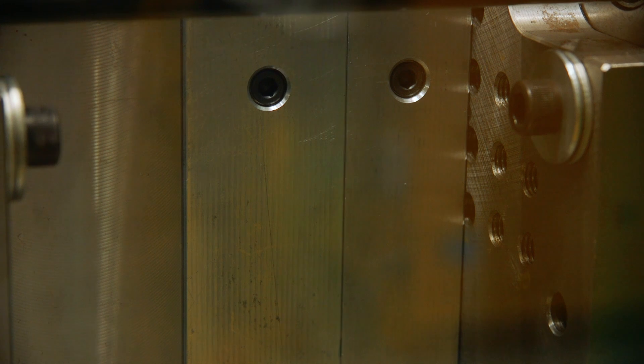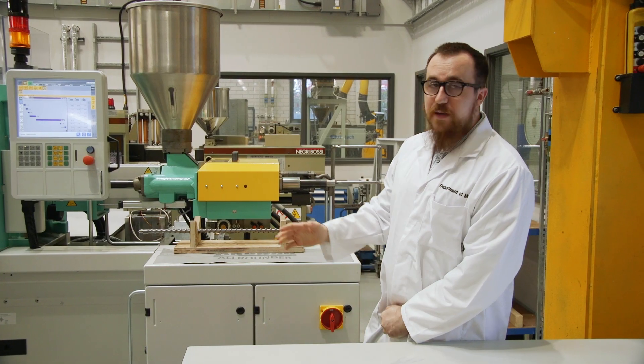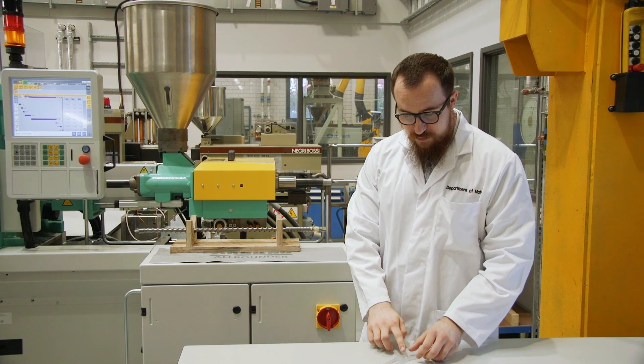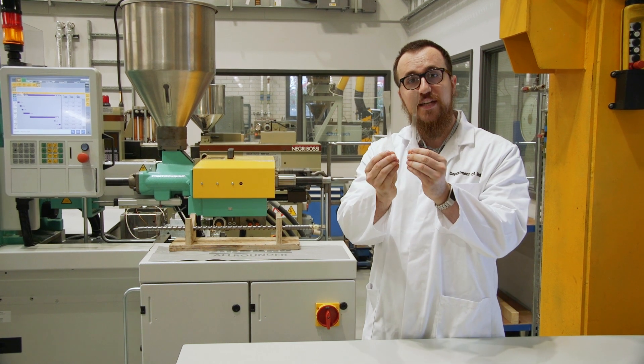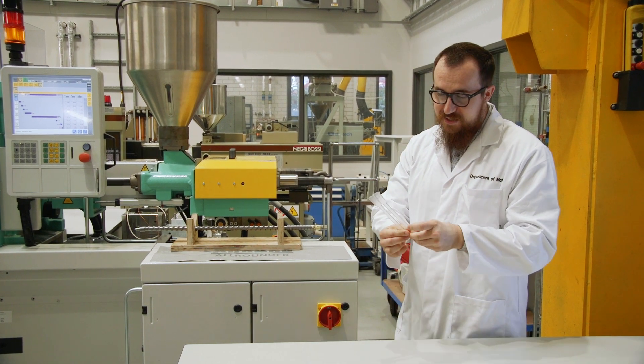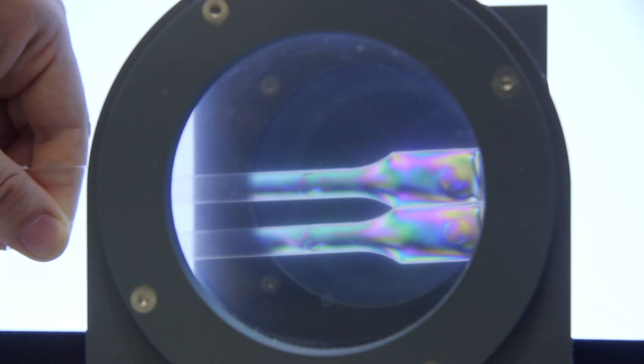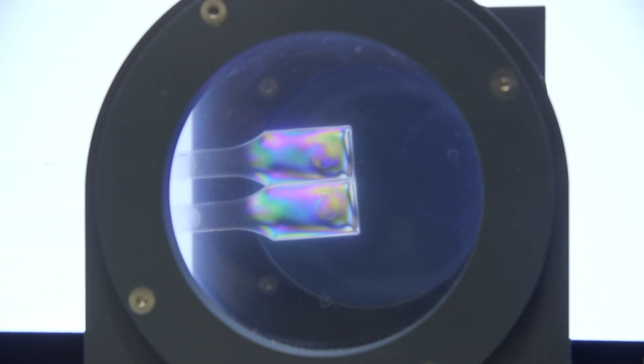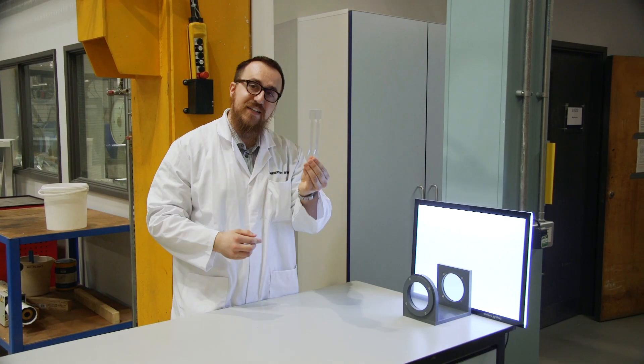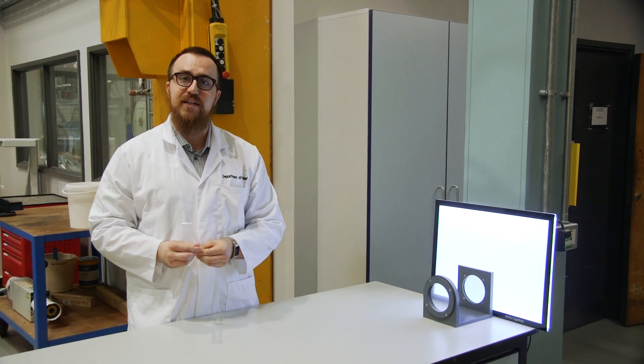This is our injection moulding machine that we use to manufacture plastics. We can vary the time, the temperature, and the pressure during the moulding process to create materials like these tensile bars here. We can take these tensile bars after they've been produced and visually inspect them through this light box and cross polarisers to visualise the stresses in the material. We can then take them to other pieces of equipment where we can mechanically test them.